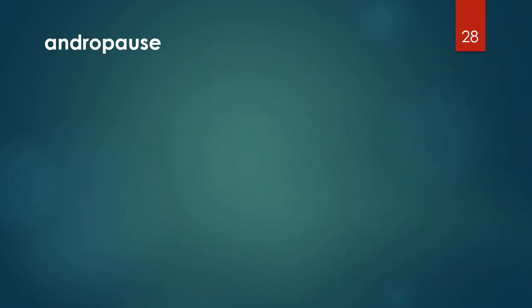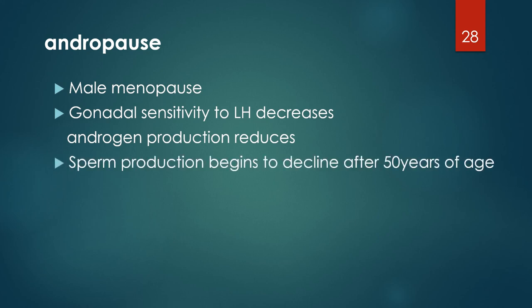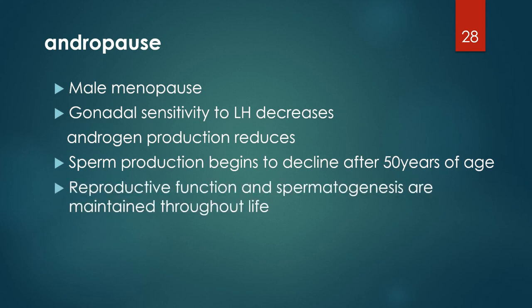Regarding andropause — if females have menopause, males have andropause, the male menopause. It is the result of decreased gonadal sensitivity to LH and also secondary to decreased androgen production. Sperm production usually decreases after 50 years of age, but reproductive function and spermatogenesis are still maintained throughout life.